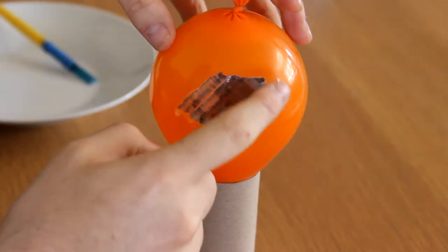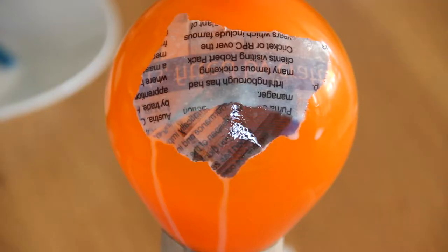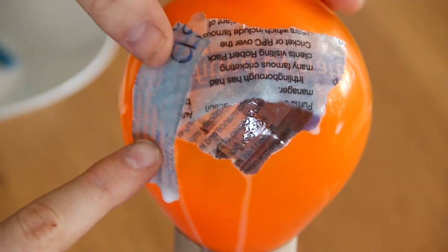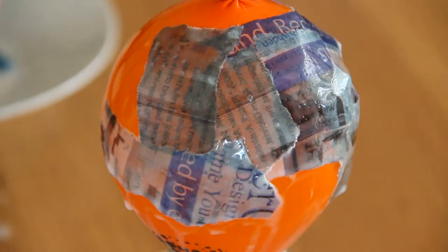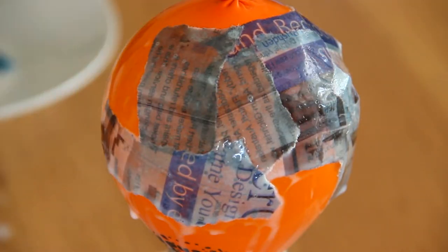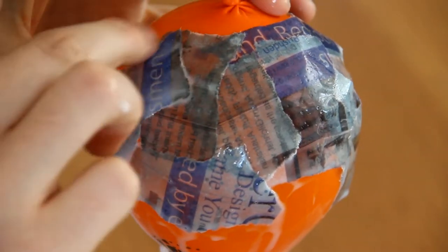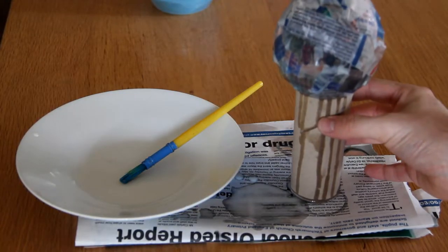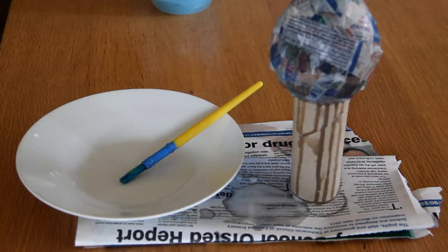Now this is what I'm doing here as you can see. You can also use a paintbrush to put on the newspaper and then paint on the glue, although it's a lot messier if you just dip it straight into the solution. And I'm also resting it on this cardboard tube to keep it away from the table. Then once the whole balloon is covered, leave it to dry overnight.